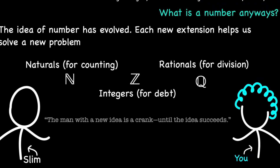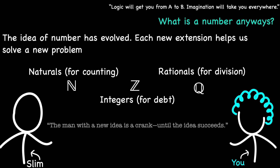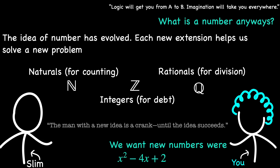The rational numbers, despite their power, still fall short when it comes to solving equations like x squared minus 4x plus 2. So drawing inspiration from the boldness of earlier mathematicians, we'll push the boundaries of what a number can be. This exploration will lead us to the concept of splitting fields.